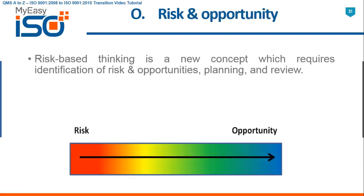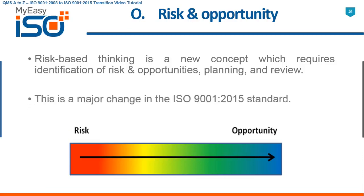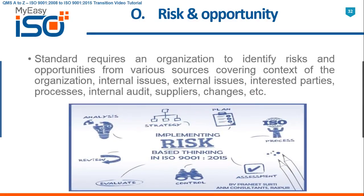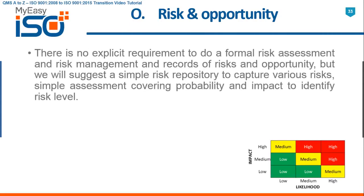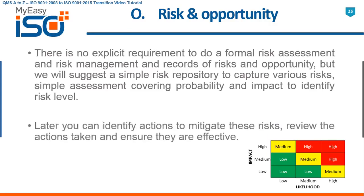O — Risk and Opportunity. Risk-based thinking is in with identification of risks and opportunities, planning, and review. This is a major change in the ISO 9001 2015 standard. The standard requires an organization to identify risks and opportunities from various sources covering context of the organization, internal issues, external issues, interested parties, processes, internal audit, suppliers, changes, etc. There is no explicit requirement to do a formal risk assessment, but we suggest a simple risk repository to capture various risks, with a simple assessment covering probability and impact to identify risk level. You can then identify actions to mitigate these risks, review the actions taken, and ensure they are effective.